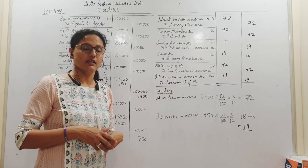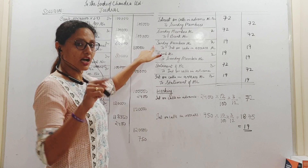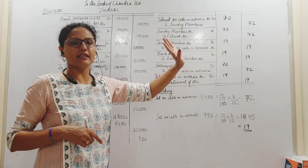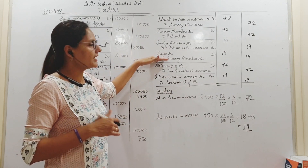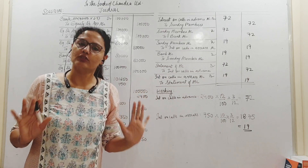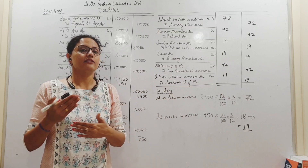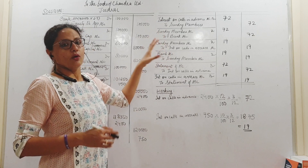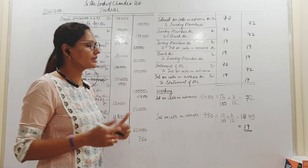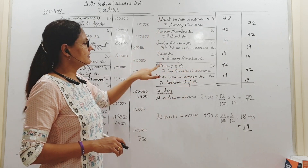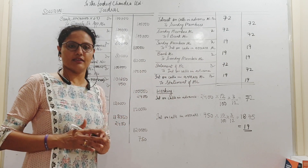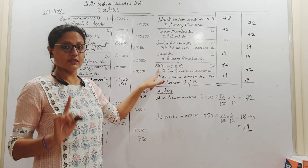For interest on calls in arrears — it is an income for the company. I charge it from sundry members, so debit sundry members and credit interest on calls in arrears — 19 rupees. When I receive it: bank account debit 19 rupees, to sundry members — their account is closed. All incomes and expenses are closed at year end by transferring to statement of profit and loss. Interest on calls in advance is an expense: debit statement of P&L, credit interest on calls in advance. Interest on calls in arrears is income: debit interest on calls in arrears, credit statement of P&L.